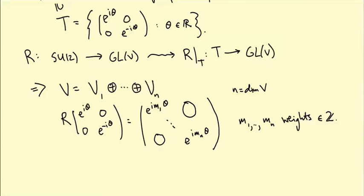But for now, I want to just look at some examples and figure out what the weight space decompositions are for those examples. Oh, I should say these are called weight spaces. So the Vi's are called weight spaces.